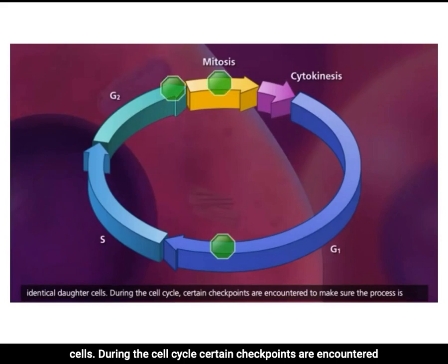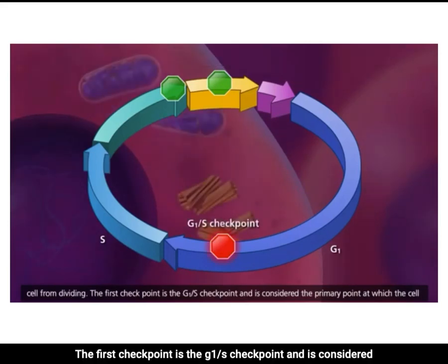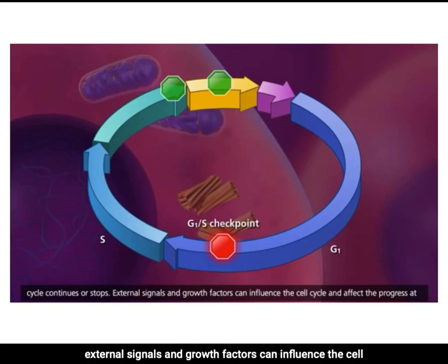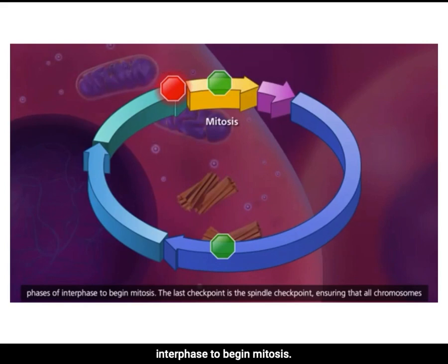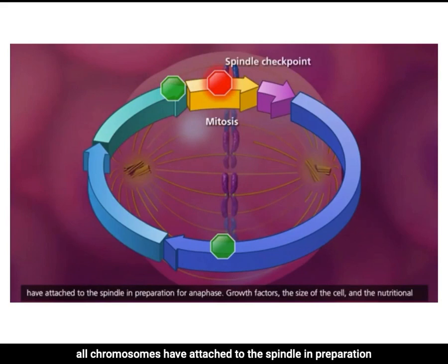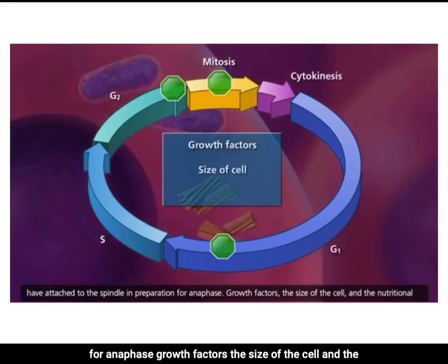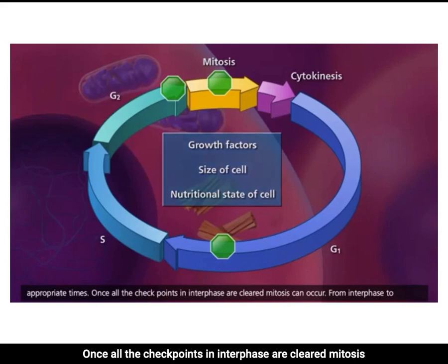During the cell cycle, certain checkpoints are encountered to make sure the process is occurring accurately — if not, the cell cycle will stop and correct, or possibly inhibit that cell from dividing. The first checkpoint is the G1/S checkpoint, considered the primary point at which the cell cycle continues or stops, and external signals and growth factors can influence progress here. The G2/M checkpoint allows cells that have successfully completed all three phases of interphase to begin mitosis. The last checkpoint is the spindle checkpoint, ensuring all chromosomes have attached to the spindle in preparation for anaphase.